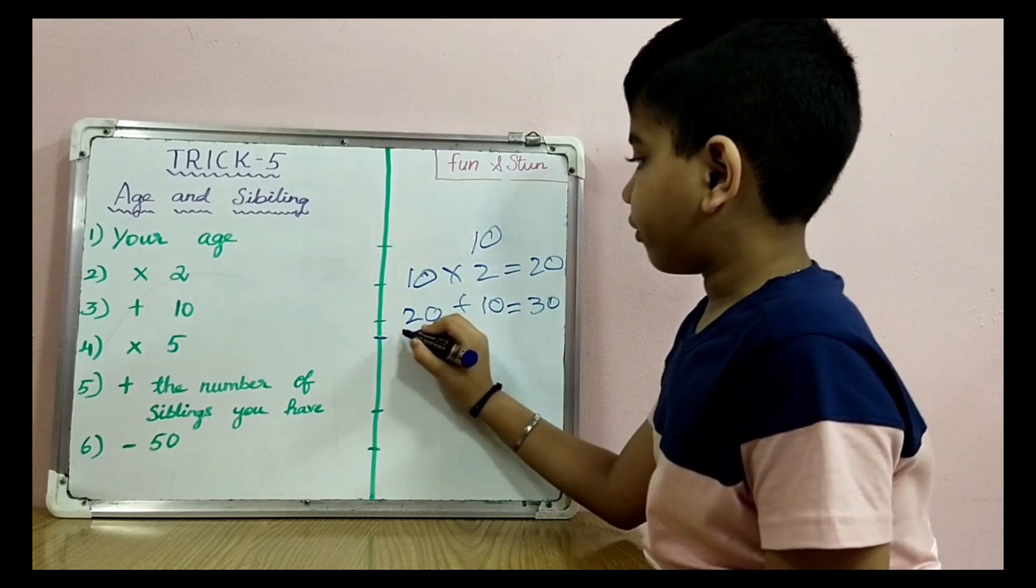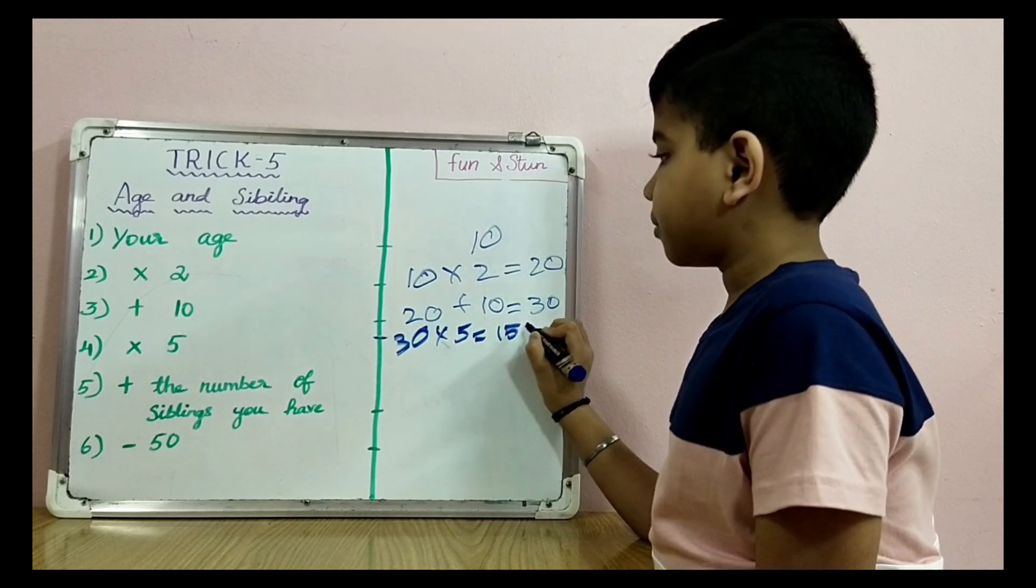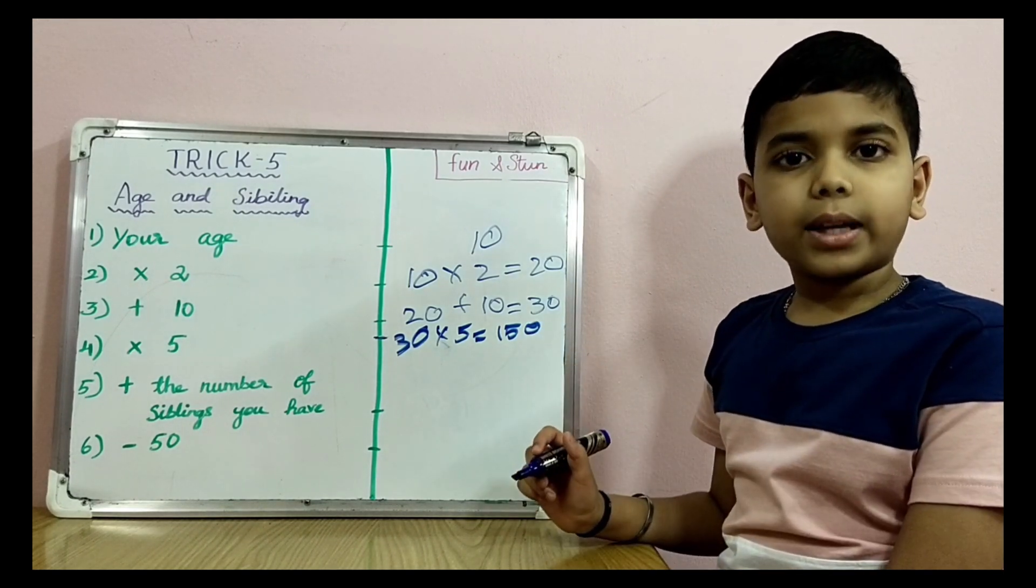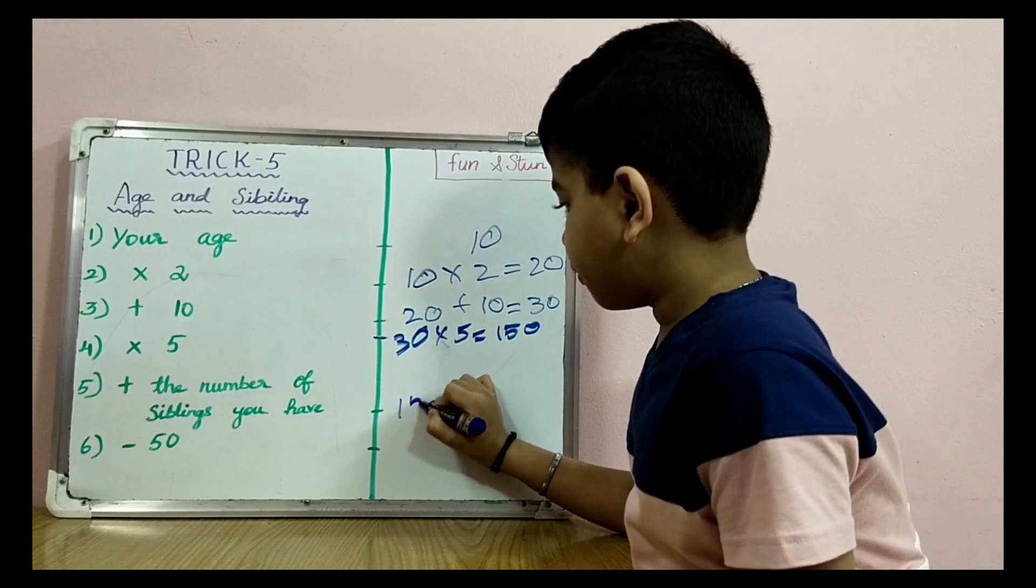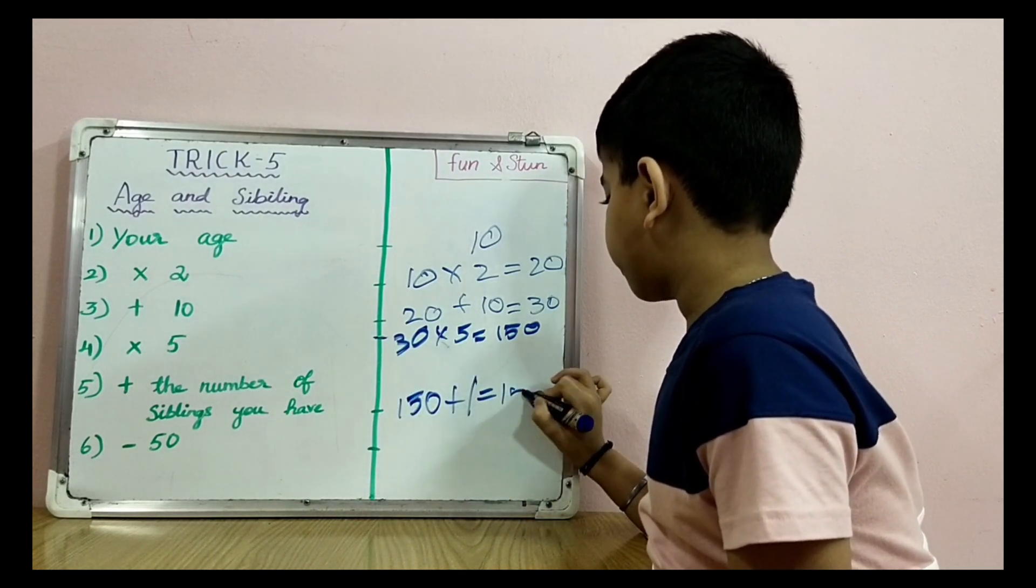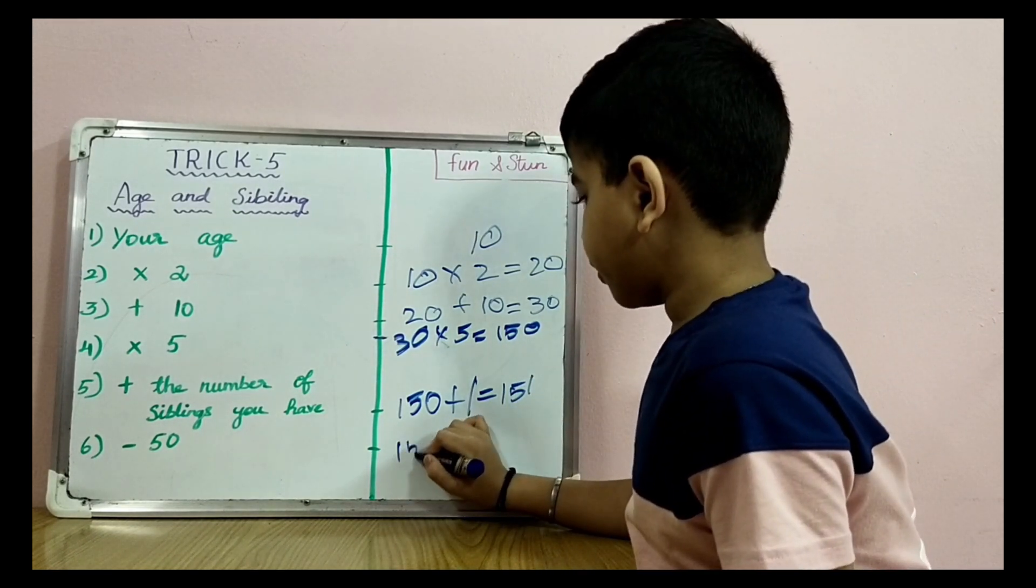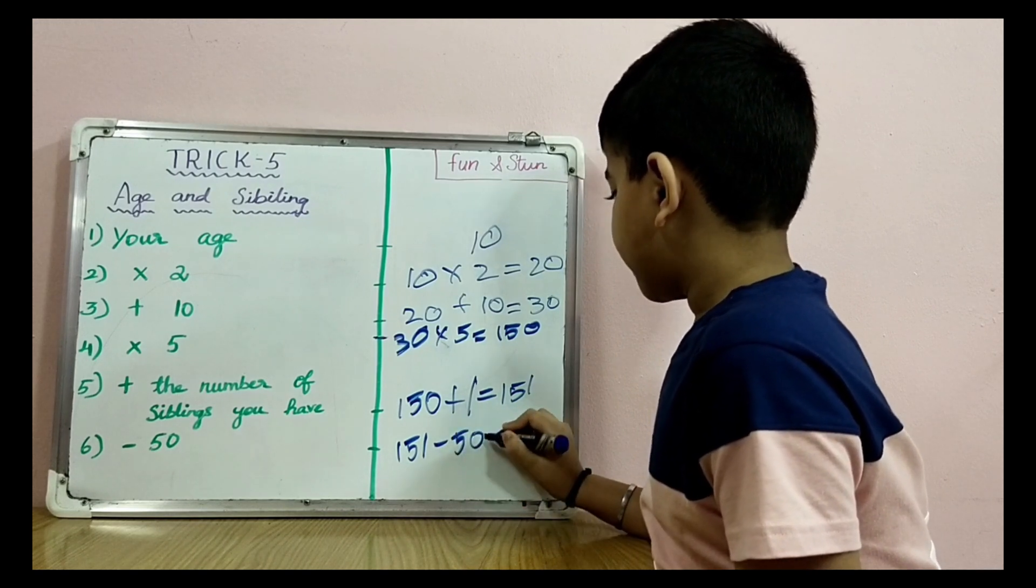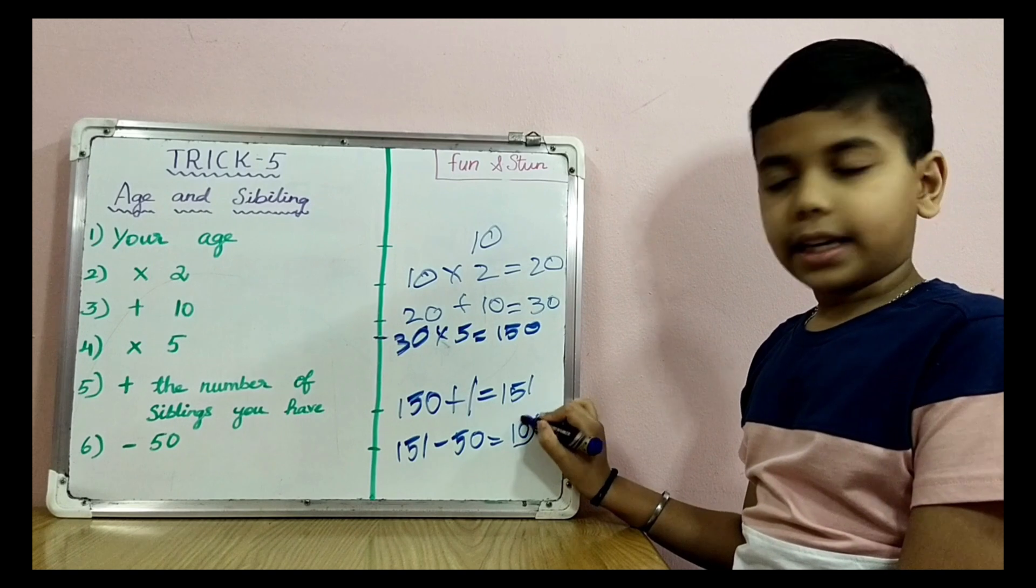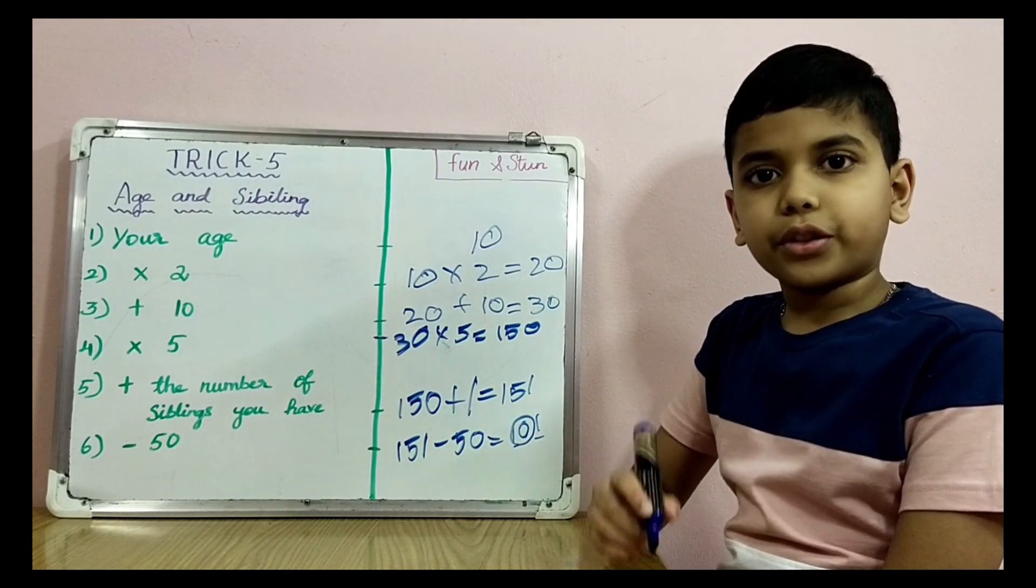Times 5: 30 times 5 equals 150. Add the number of siblings you have: I have 1 sister, so 150 plus 1 equals 151. Minus 50: 151 minus 50 equals 101. 10 is my age and 1 is the sibling I have. It's time for you to check.